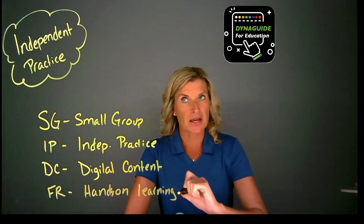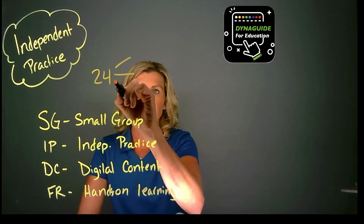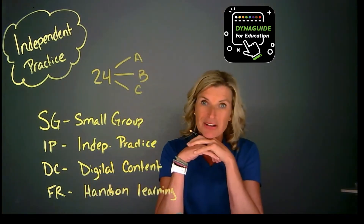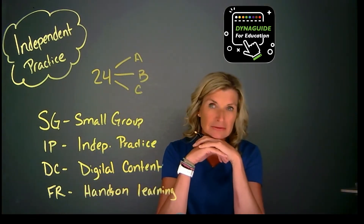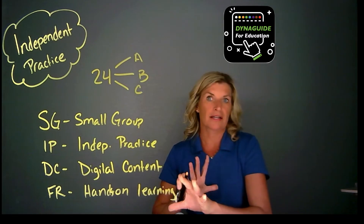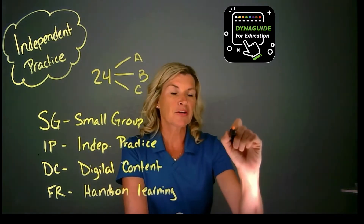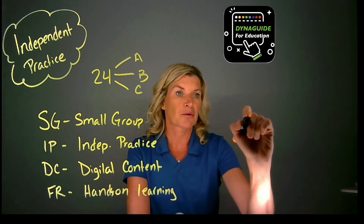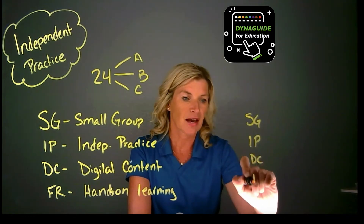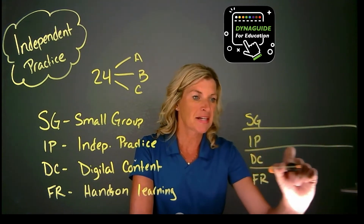The first thing I'm going to do is take my class of 24 students and break them up into three groups: Group A, B, and C. That means about eight kids per group. Over here to the side, I'll show you the grid that works with it. I have columns for Small Group, Independent Practice, Digital Content, and Future Ready, and rows for groups A, B, and C.